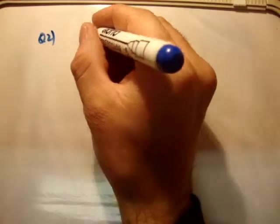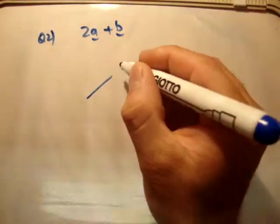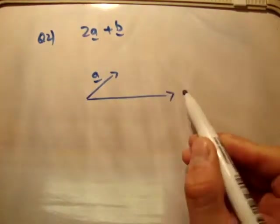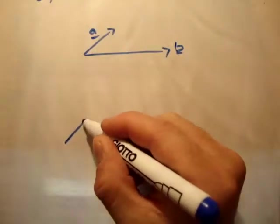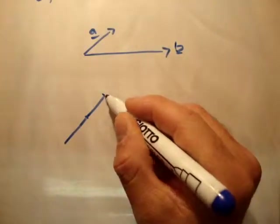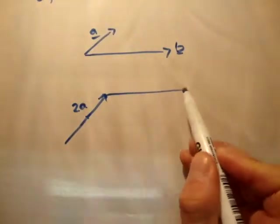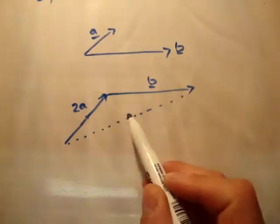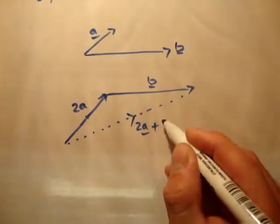Question 2: show the vector 2A plus B. You're given that this is A and this is B. So 2A would be 1A, 2A. Then this is B. Draw from the tail of 2A to the head of B — that's 2A plus B.